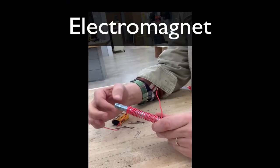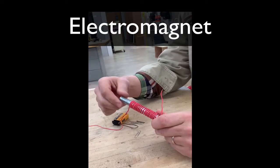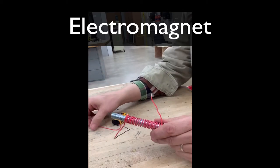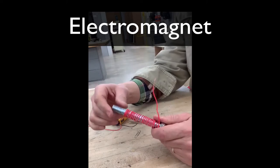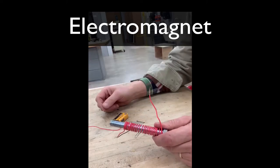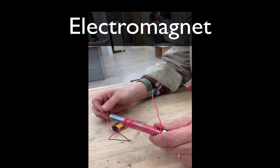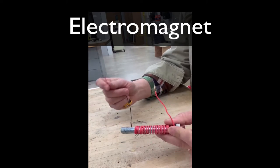To make this electromagnet, I took copper wire and I wrapped it around this bolt. When the electricity flows through and around this bolt, it creates a magnetic field, but only when the electricity is flowing through it.